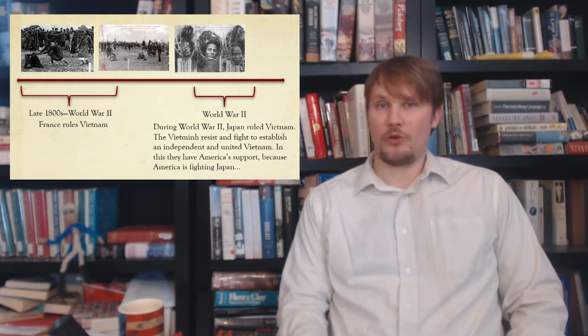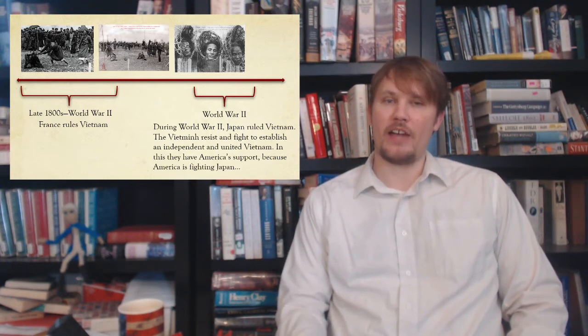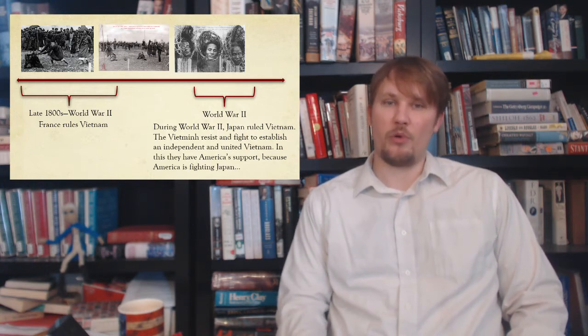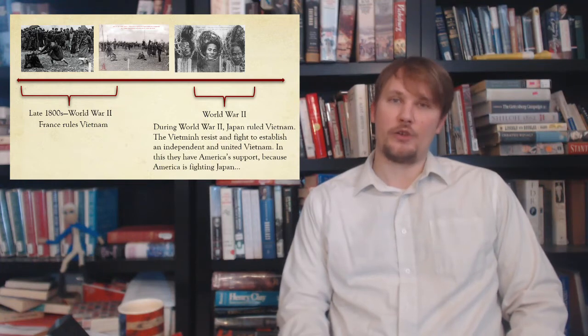Fast forward to World War II — Japan ruled Vietnam during that war, but the Viet Minh resisted and fought to establish an independent and unified Vietnam, with America's support since America was also fighting Japan. The leader of North Vietnam throughout this whole period was Ho Chi Minh. His birth name was Nguyen Tat Thanh, born around 1890. He later used names such as Nguyen Ai Quoc, meaning 'Nguyen the Patriot,' and Ho Chi Minh, meaning 'He Who Enlightens.'